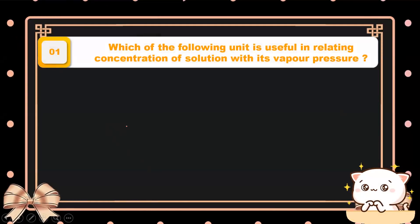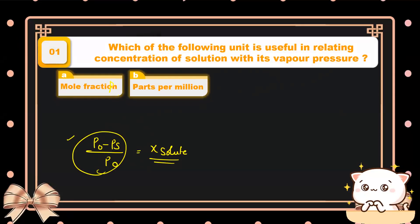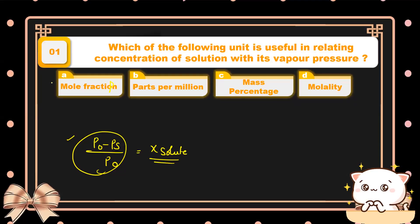Question number one: which of the following units is useful in relating concentration of a solution with its vapor pressure? According to Raoult's law, the formula is (P₀ - Ps) / P₀ = mole fraction of solute. So we can relate the lowering of vapor pressure with mole fraction. Option one — mole fraction — is the right answer, according to Raoult's law.